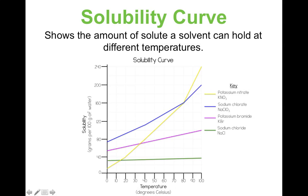First, notice the axes and their labels. On the x-axis we have temperature in degrees Celsius, showing how solubility changes as temperature increases. The y-axis is solubility with units of grams per 100 grams of water — so this number tells me how many grams of solute are dissolved in 100 grams of water. In the key, each line is a different color representing a different substance: the yellow line is potassium nitrate, the blue line is sodium chlorate, the pink line is potassium bromide, and the green line is sodium chloride.